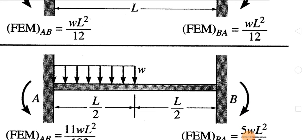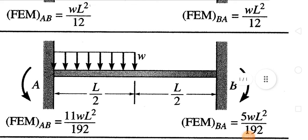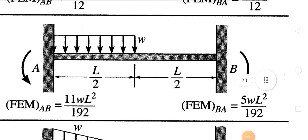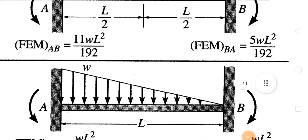When there is a uniformly distributed load acting only till the midpoint, starting from A, the fixed end moment at A will be 11WL²/192, and at side B it will be 5WL²/192. There is a difference because the load is acting on the side of A.